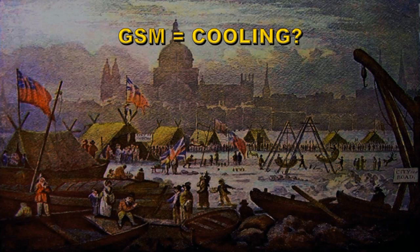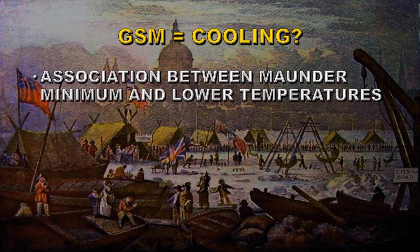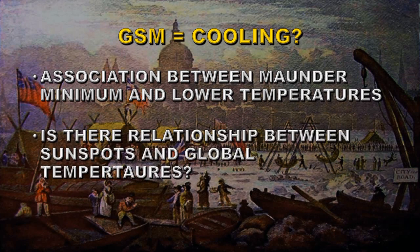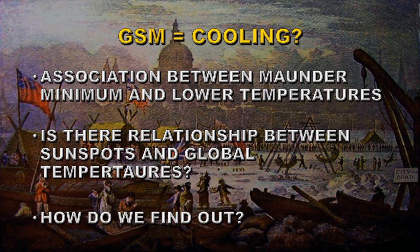There are often claims of an association between the Maunder Minimum and lower temperatures, and you'll often see pictures of the Thames frozen over and things of that sort. What they don't mention is these pictures were painted during the Little Ice Age, not just the Maunder Minimum. So is there a relationship between sunspots and global temperatures? I'm going to show you how we find out.